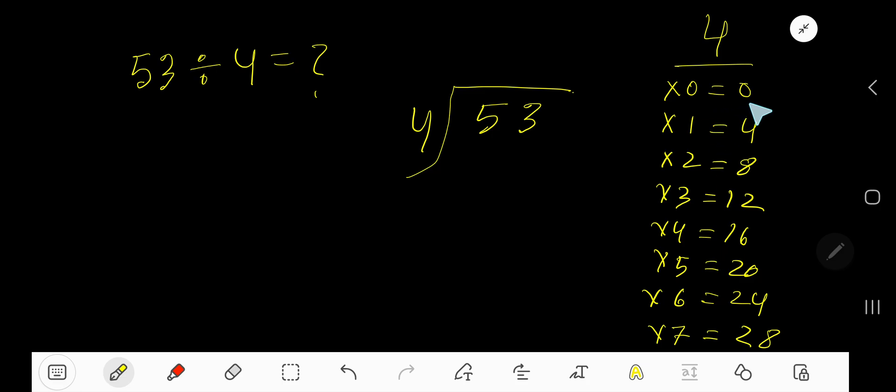To find out the multiplication table of 4, just add 4 with the previous step. 0 plus 4 is 4, 4 plus 4 is 8, 8 plus 4 is 12. This process will continue.